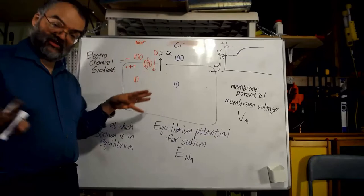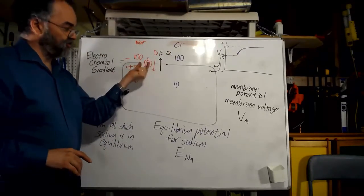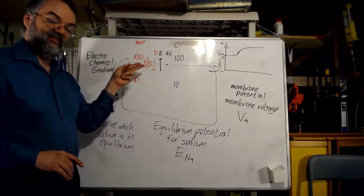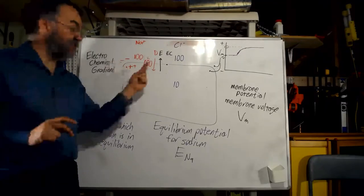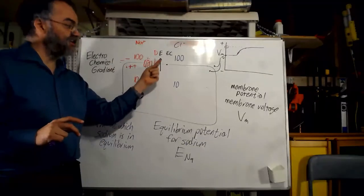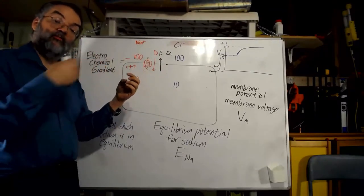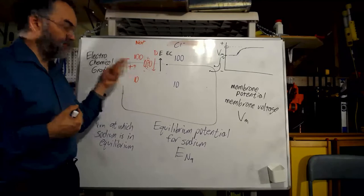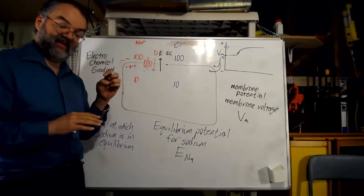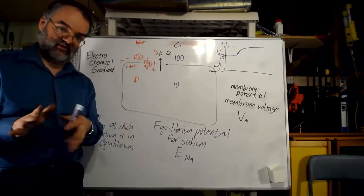So what we just found is: if I start with this situation and open a sodium channel, sodium comes in, making the inside more positive, until it's made it positive enough to push back so that no more sodium overall will come in. That amount of voltage is what we call ENa — the equilibrium potential for sodium.